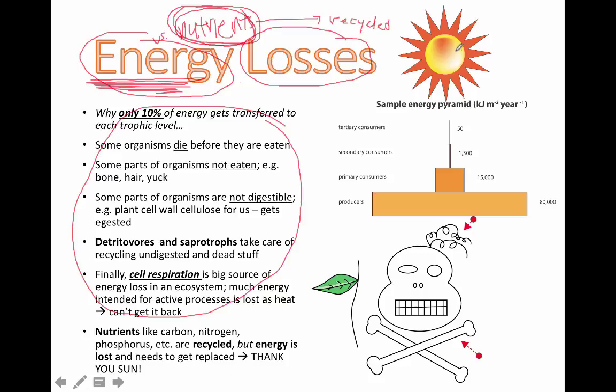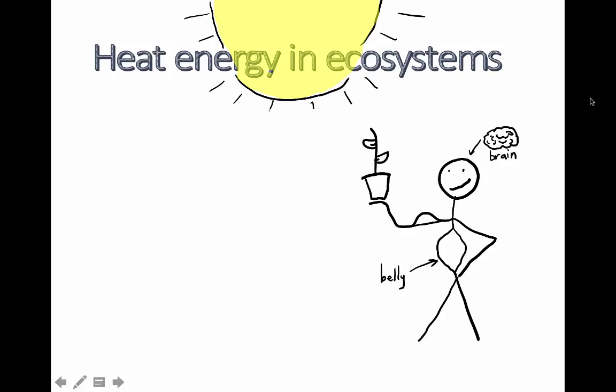So nutrients like carbon, nitrogen, and phosphorus are recycled, but energy is lost and needs to be replaced. Where does that replacement energy come from? The sun — our big, happy energy source up there.